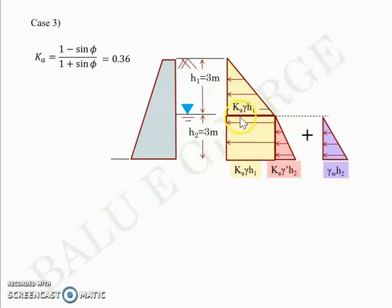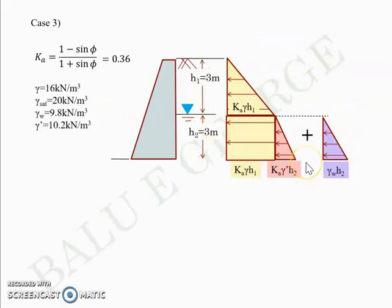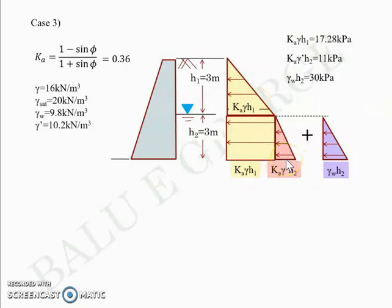Computing the base widths: Ka·γ·H1 ≈ 17.28 kPa, Ka·γ'·H2 ≈ 11 kPa, and γ_w·H2 ≈ 30 kPa. Knowing all the geometric parameters, the sum of areas gives Pa. The instructor suggests working these out independently to cross-check the answers.